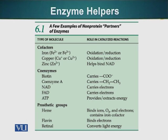Coenzymes. Examples are biotin, which carries the carboxyl group. Coenzyme A, NAD, FAD, and ATP. ATP can also be considered a coenzyme for different enzymes.